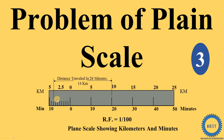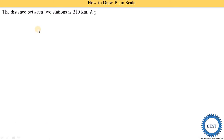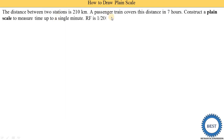In this video, we solve a problem of plane scale — we construct a plane scale for a particular problem. The problem is related to a train traveling from one station to another station. The distance between the two stations is 210 kilometers, and a passenger train covered that distance in seven hours.